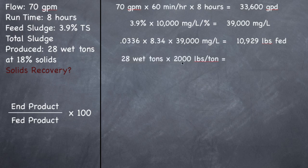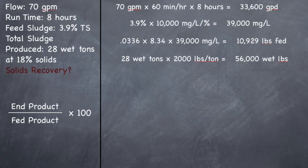So 28 wet tons times 2,000 pounds per ton gives 56,000 wet pounds. If you put this on a scale, it would weigh 56,000 pounds, and it's 18% solids. Since we need to compare on the same 100% dry basis, multiply 56,000 times 0.18. That gives 10,080 dry pounds.